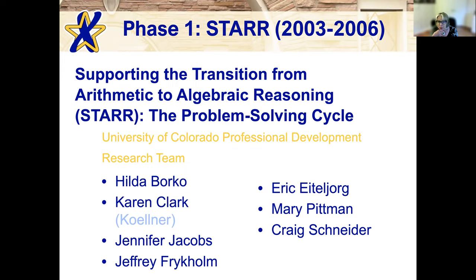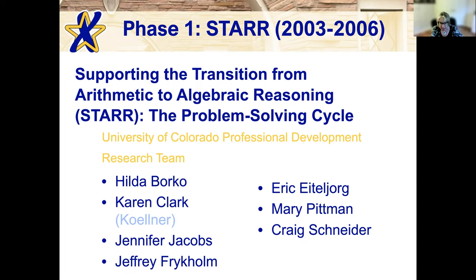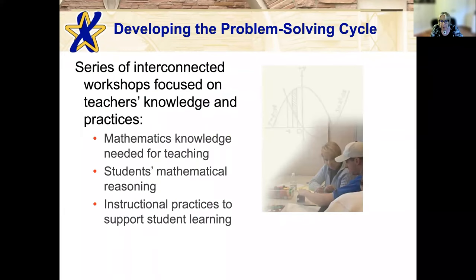The first phase, which we called STAR — Supporting the Transition from Arithmetic to Algebraic Reasoning — ran from 2003 to 2006, funded by the National Science Foundation. The principal investigators were myself, Karen Kellner, Karen Clark, Jennifer Jacobs, and Jeff Frickholm, along with three doctoral students who worked with us.